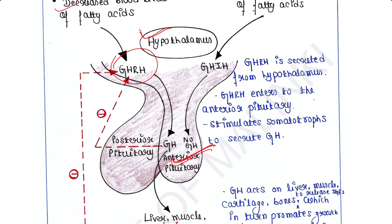GHRH enters the anterior pituitary via the hypophysial portal system, where it stimulates somatotropes to secrete growth hormone. A separate lecture on the hypophysial portal system is available — if you haven't gone through that lecture, it is highly recommended, and the link is provided in the description box.